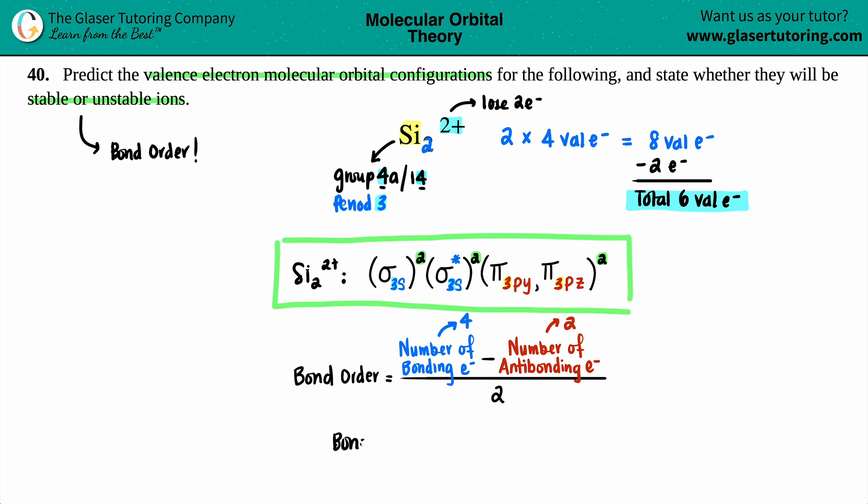My bond order would be four bonding electrons minus two antibonding, divided by two. Four minus two is two, two divided by two is one. This is not a zero. One as a bond order means you're going to make a single bond—one line, single bond.